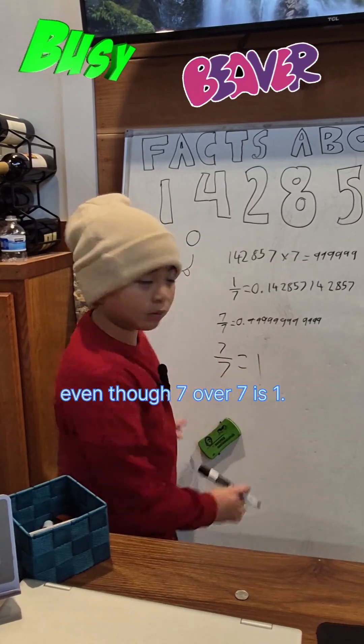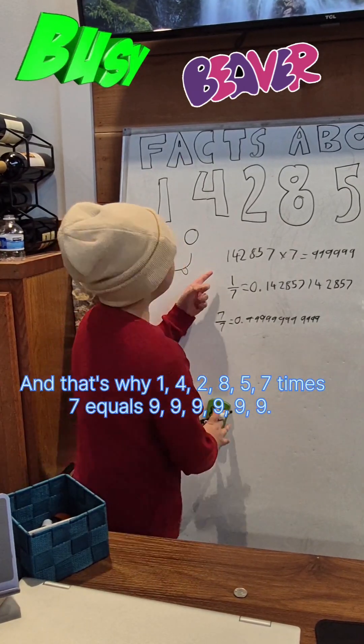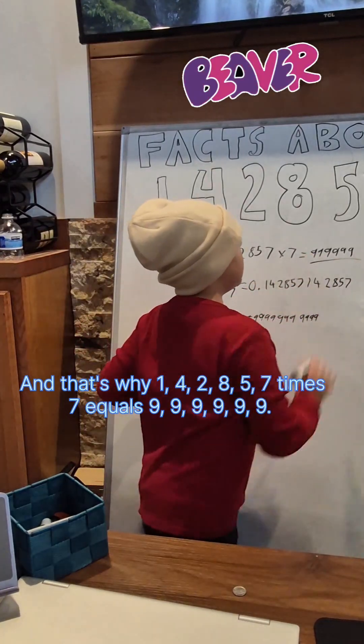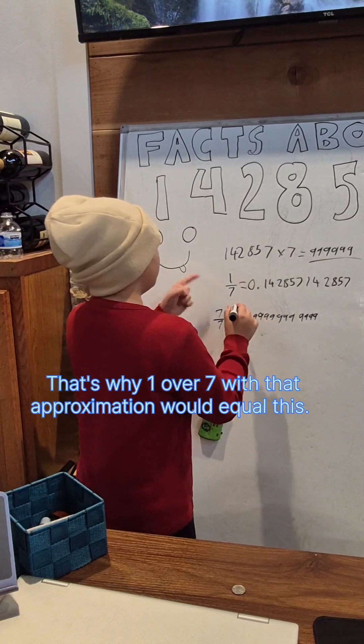over 7 is 1. And that's why 142857 times 7 equals 999999. That's why 1 over 7